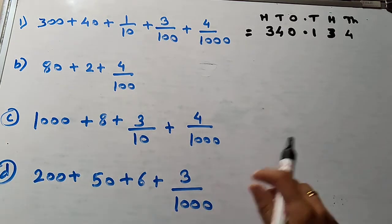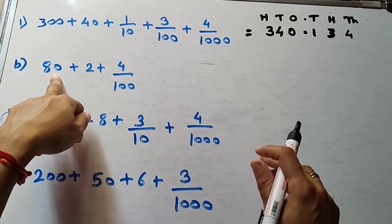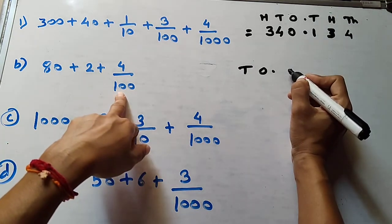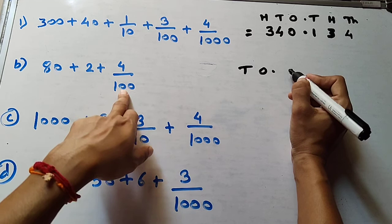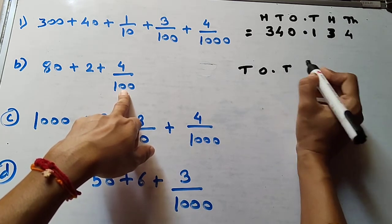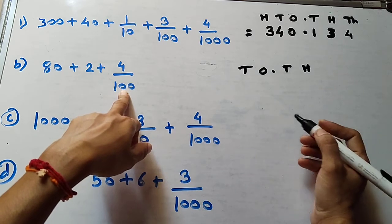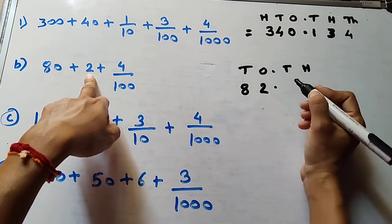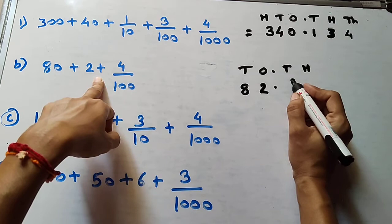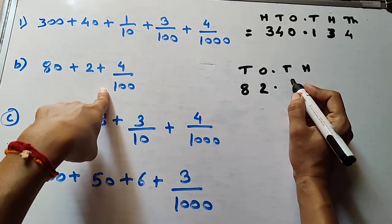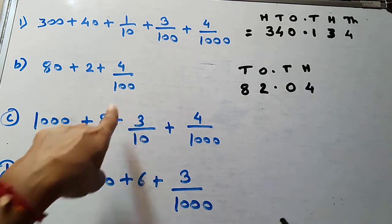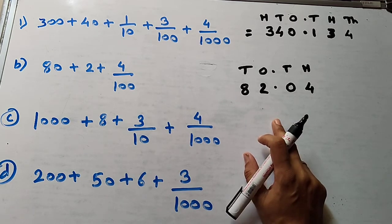Now see the second question. The greatest number given is 80, which is in the tens place. So write the number up to the tens place: ones and tens. After the decimal point, the fraction goes up to the hundredths place. 80 means 8 tens. 2 at the ones place. Decimal point. No tenths place, so write 0. Then hundredths place is 4. So we get the number 82.04. This is your answer.